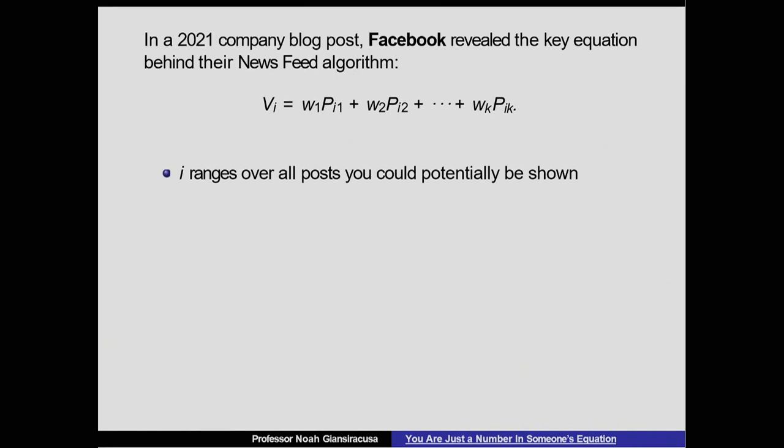Take, give me a minute. So the subscript i here is just an index. Basically, that's just telling you which particular post we're interested in. So let's pretend I'm a user. I log into my Facebook account and there's thousands of posts I could be shown. Namely, all the friends that I'm friends with, all the groups that I'm part of, all the various things that I follow, everything that they've produced since my last login or since some recent time period, that's this pool of thousands of posts I could be shown.